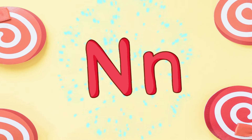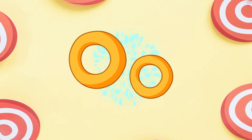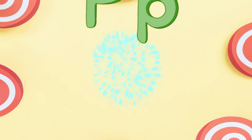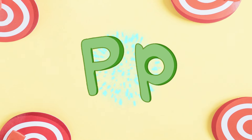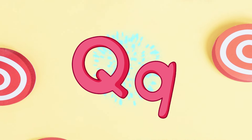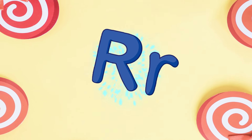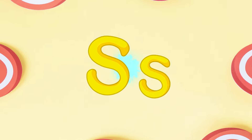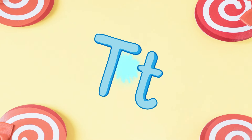N for Nest. O for Orange. P for Pineapple. Q for Queen. R for Radish. S for Strawberry. T for Tiger.